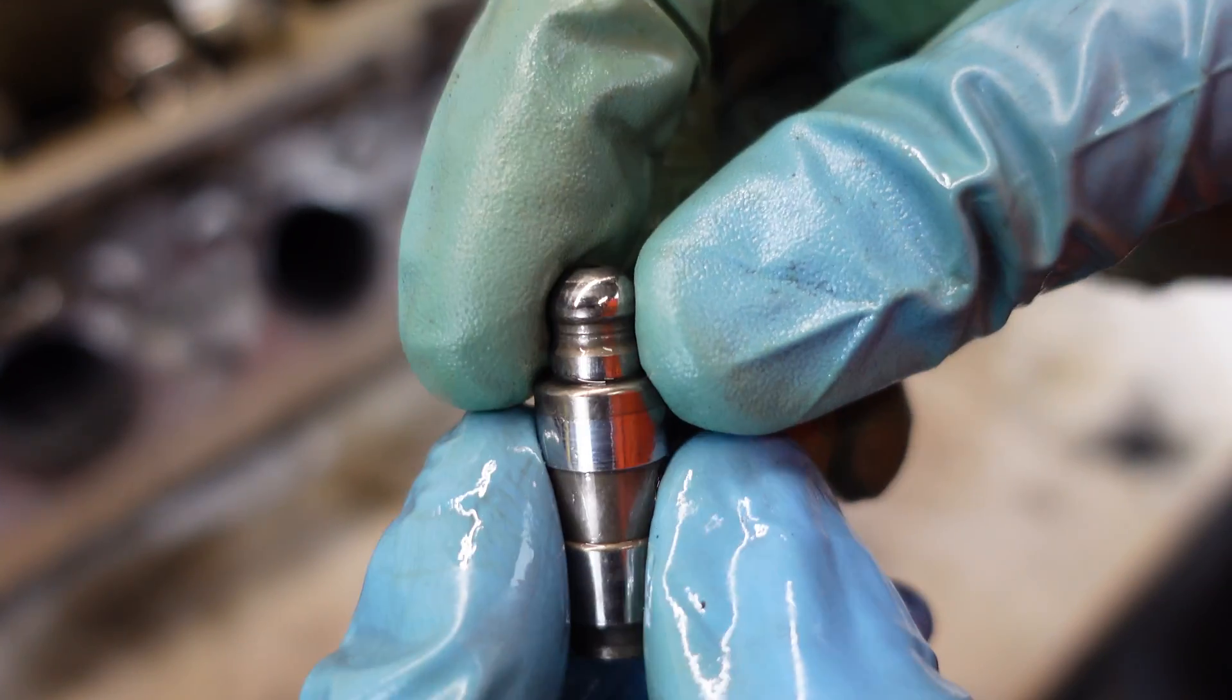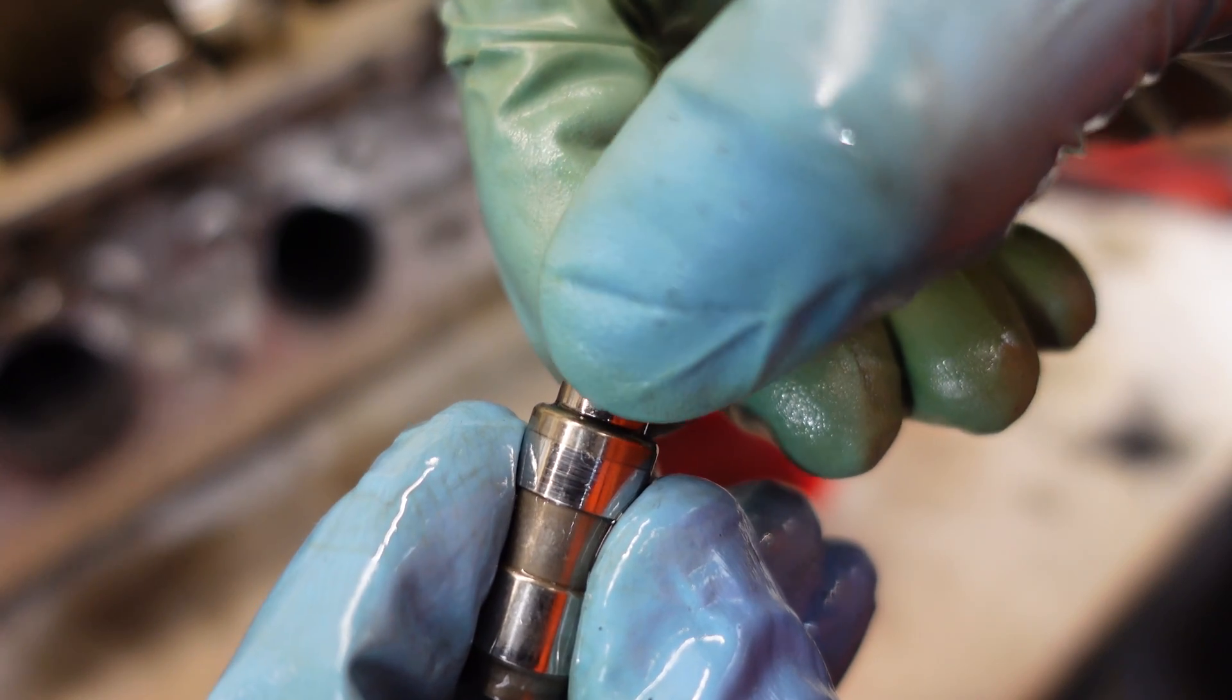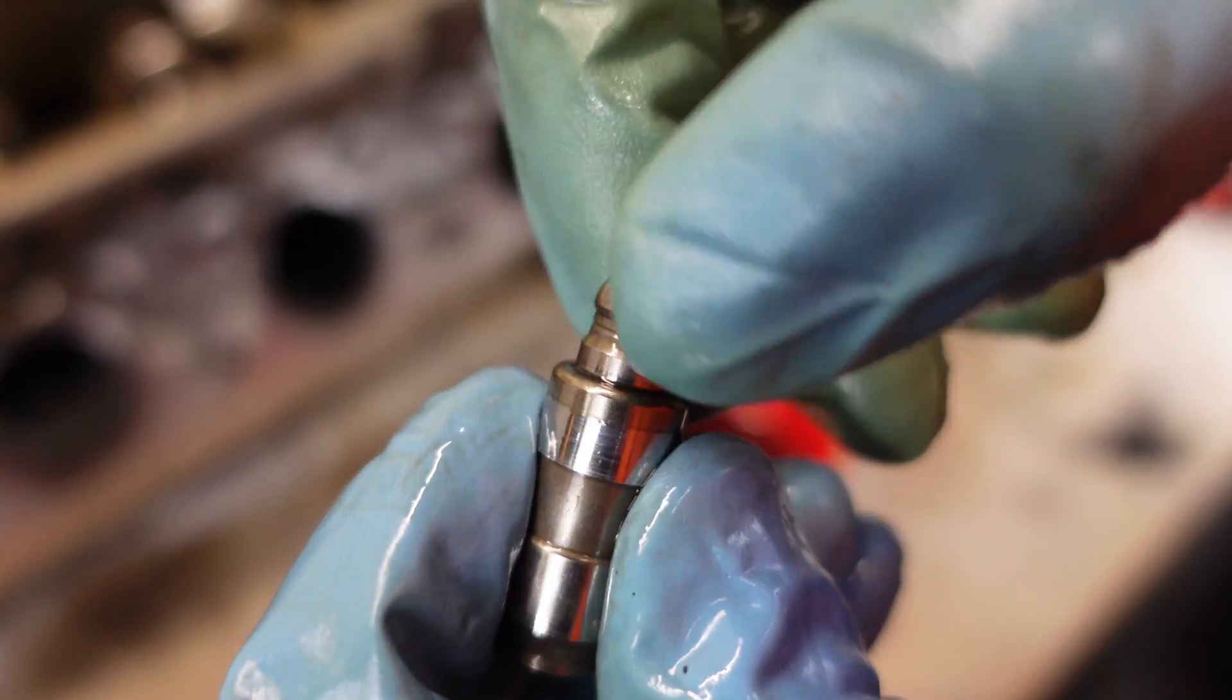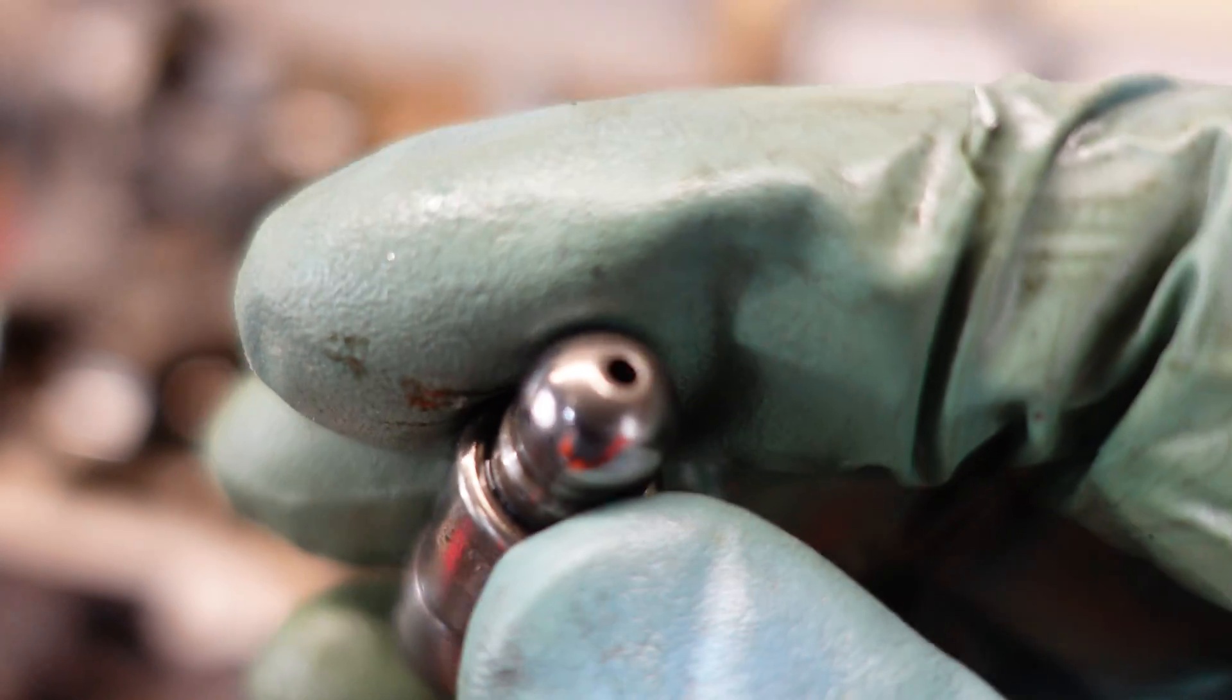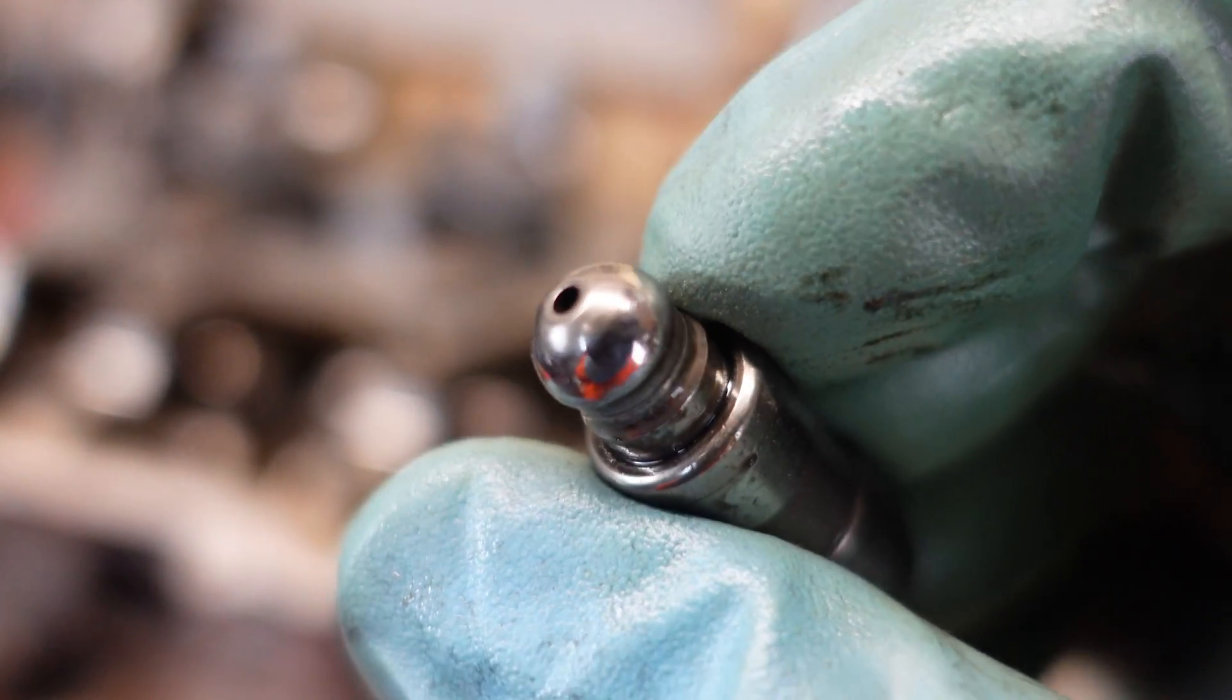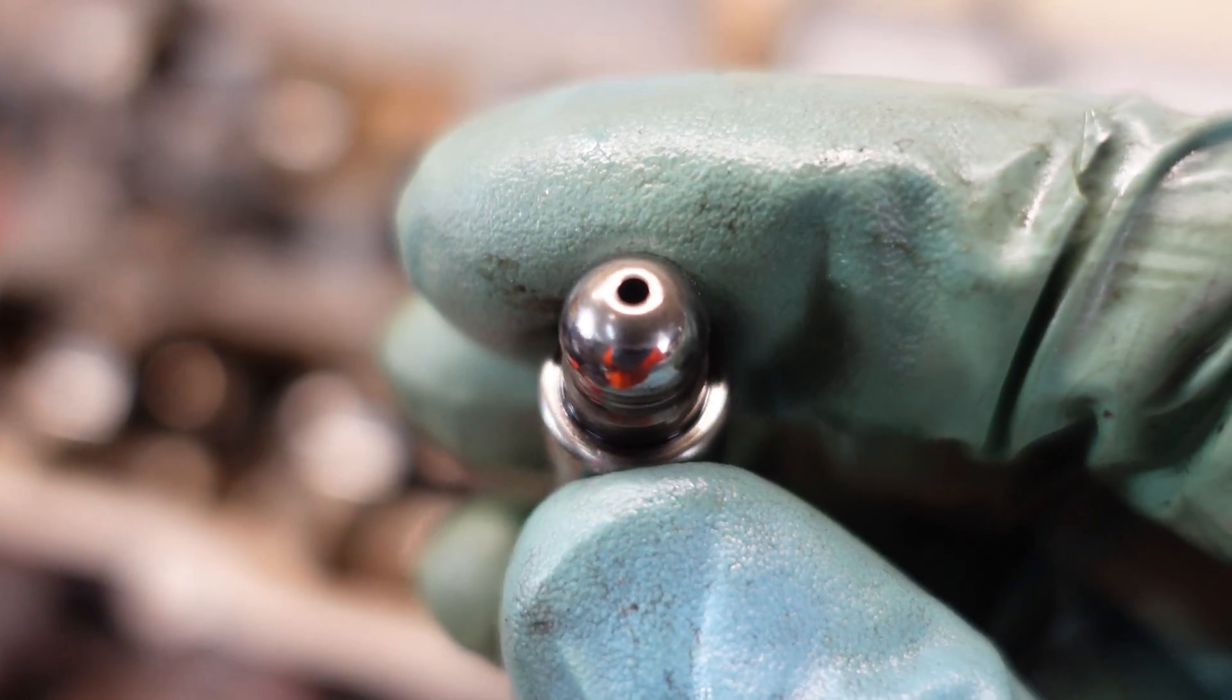One way to check if the lifter is stuck is to just try and rotate it by hand with your fingers. And if it rotates then it's probably not stuck. And the third failure mode could be worn surface on the top of the plunger. So it has to be nice and smooth and round. And if you see some weird signed wear here then you should replace it.